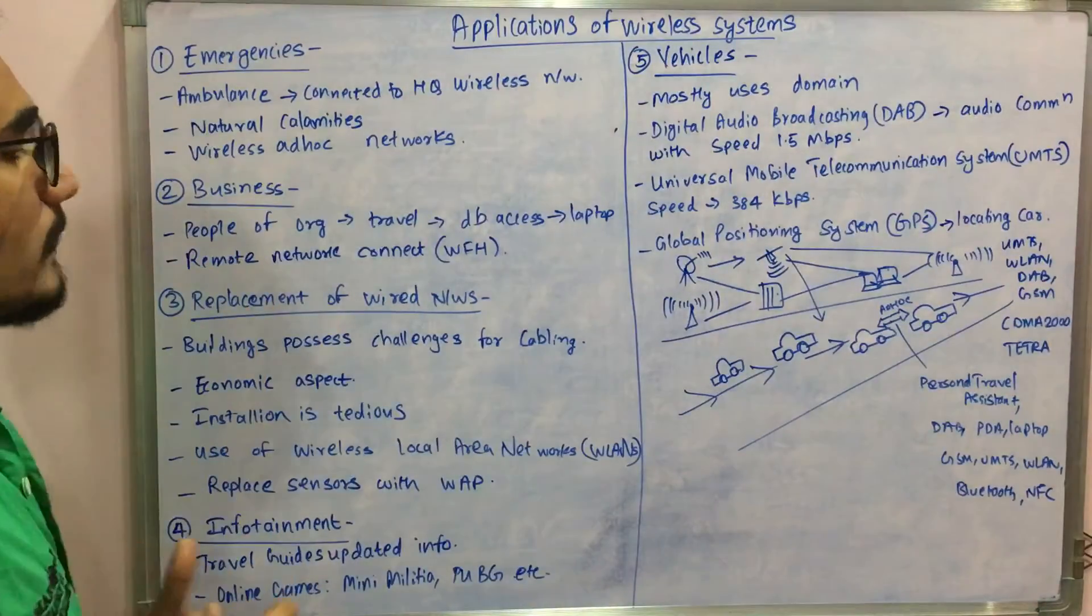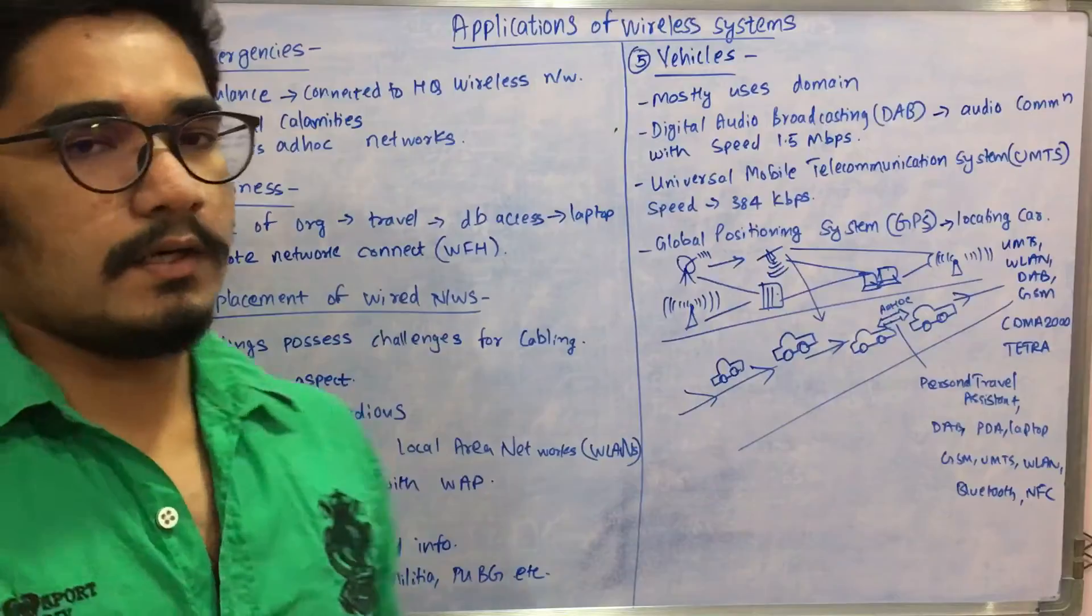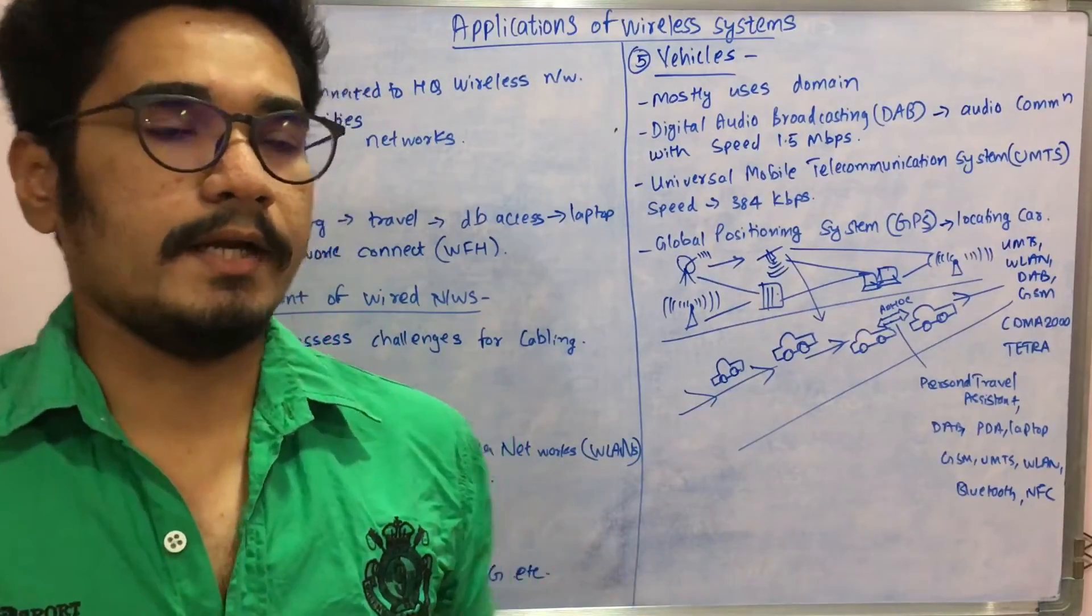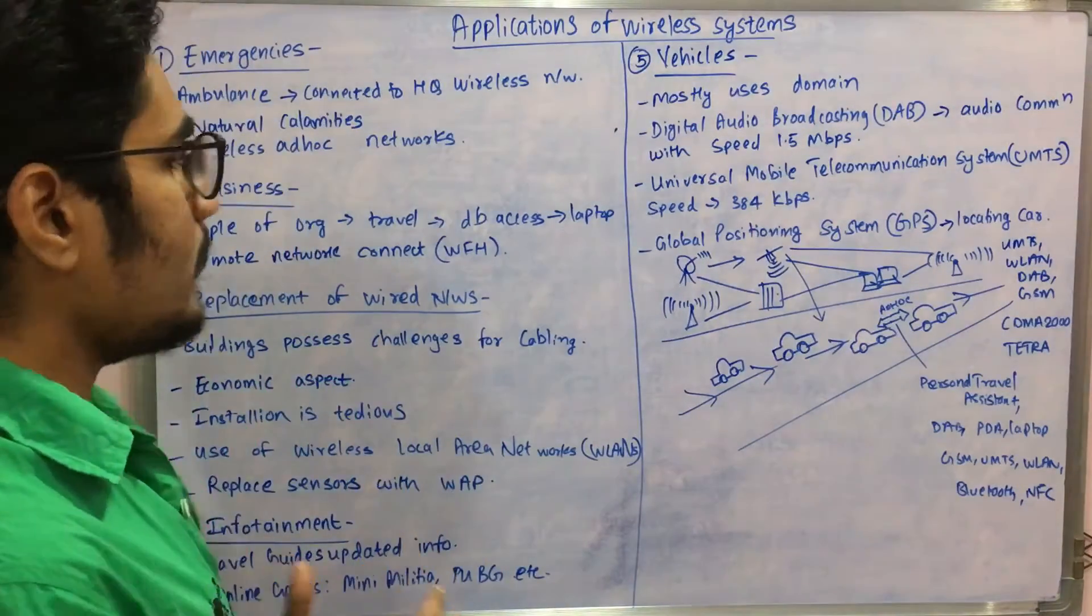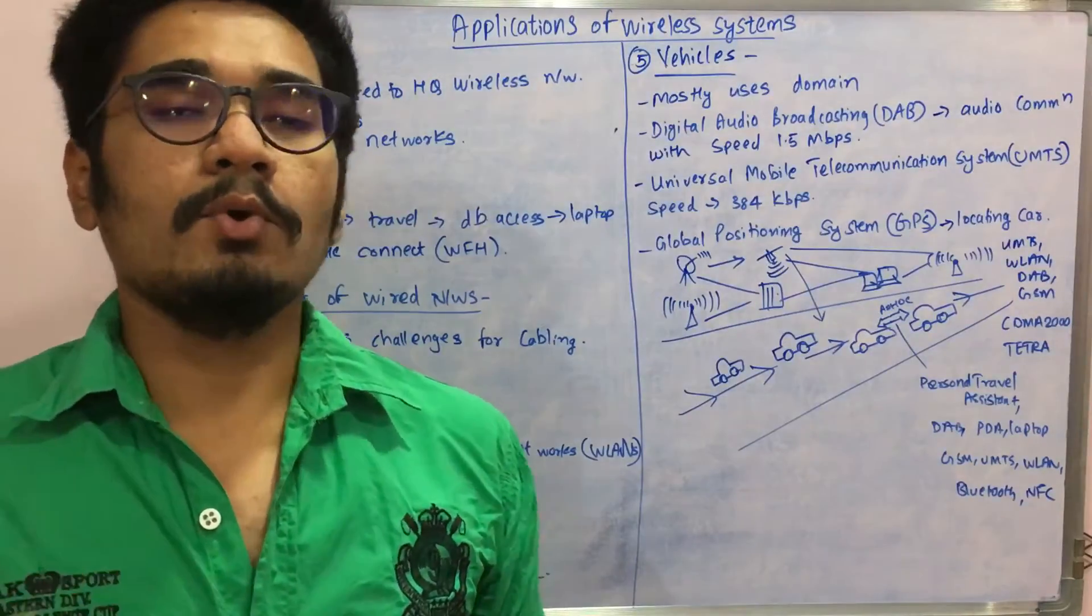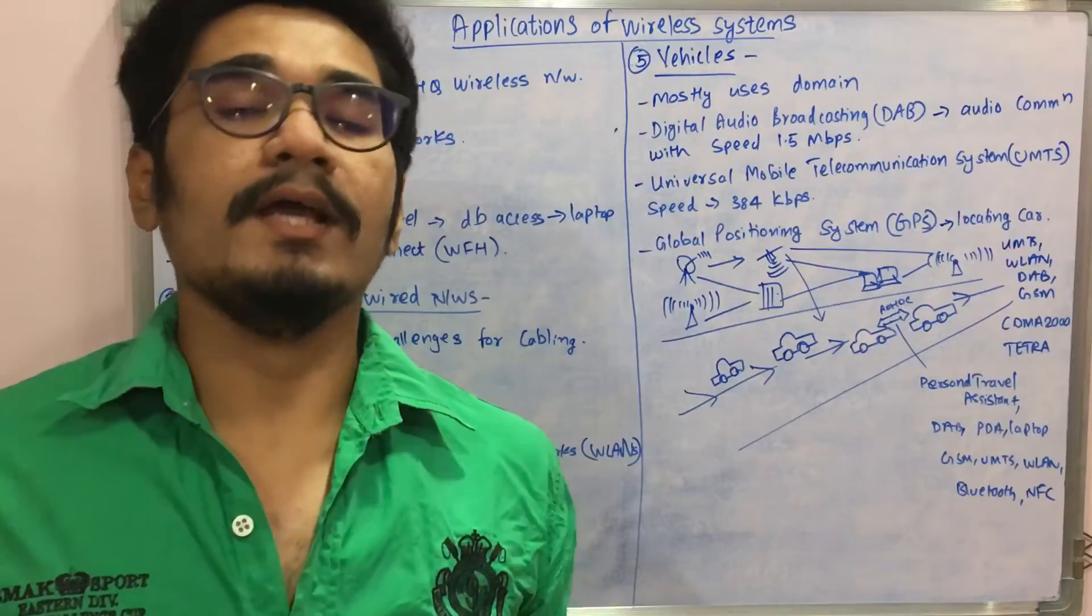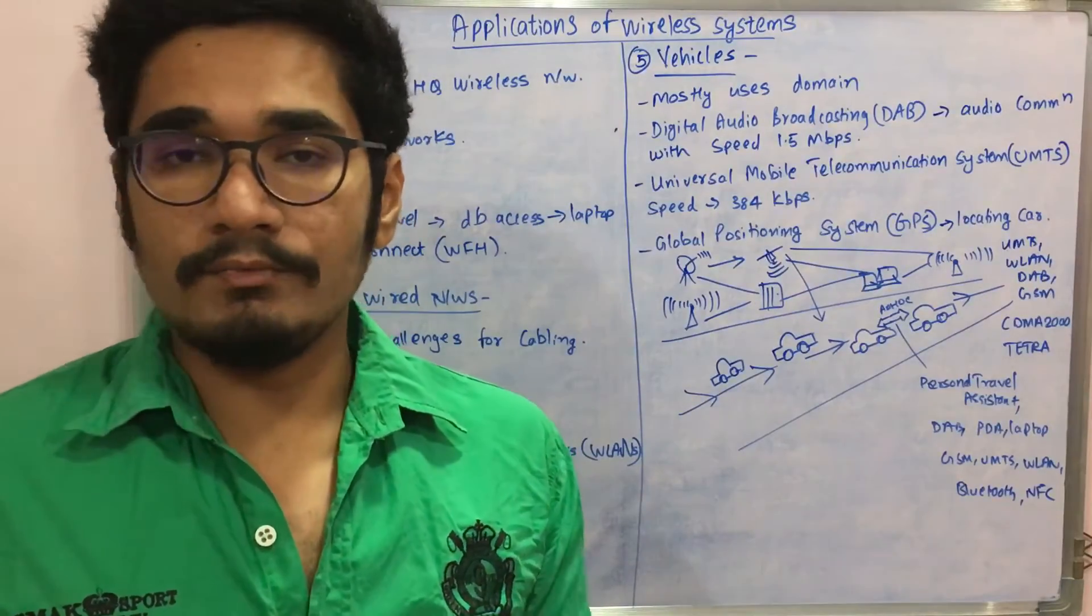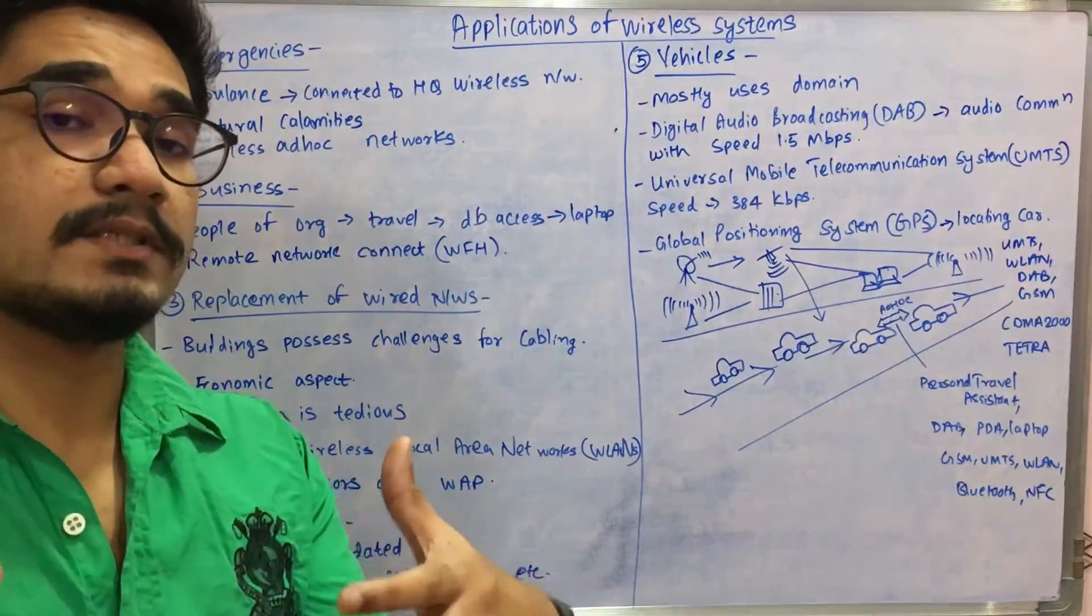Next, we have the replacement of wired networks. If you have a historical building and need some kind of wireless systems, going with cabling would be a tedious activity where wires would be laid entirely on the building, creating a big mess. To overcome that, you have wireless systems which are especially kept in those historical places and even for large buildings.